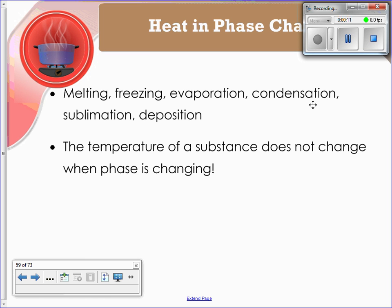The first thing you need to be aware of is these are the different phase changing actions. You've got melting and freezing, evaporation and condensation, and then sublimation and deposition. Make sure you know the definitions of those. The important thing to remember when you are undergoing a phase change is that the temperature does not change at all while the phase is changing. For example, if you put water on to boil and that water is boiling, it stays at exactly 100 degrees Celsius. It never gets any hotter than that until all the water has boiled off.